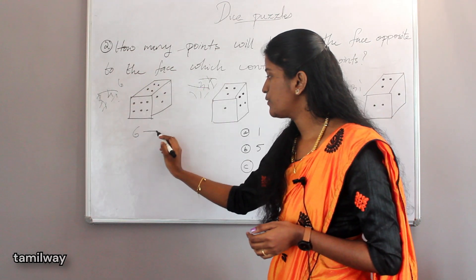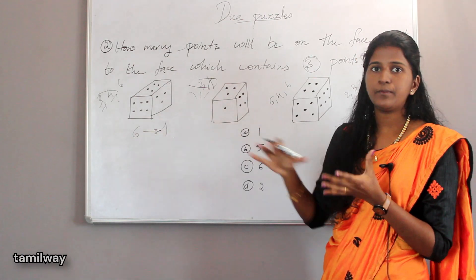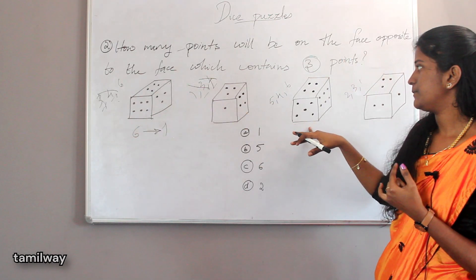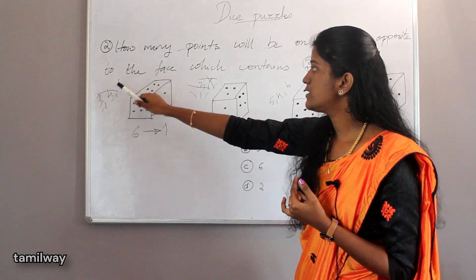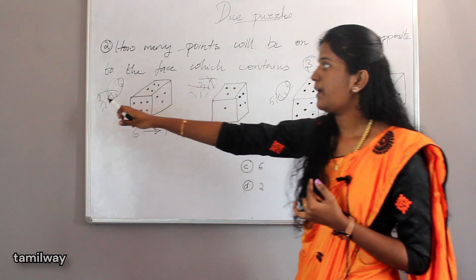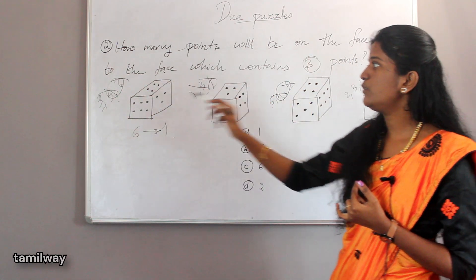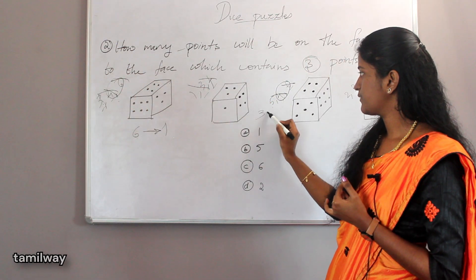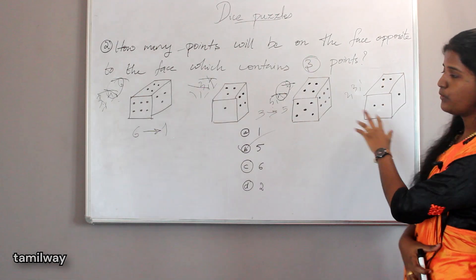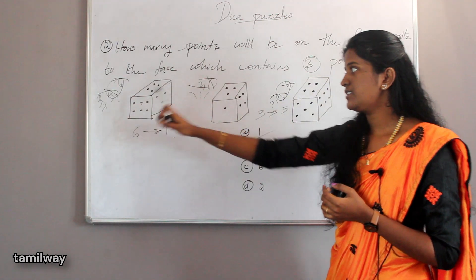We can find the opposite face. Three is common and four is common. Four cancels out — four sits. So three is opposite five. Using this cube comparison method, three is opposite five.